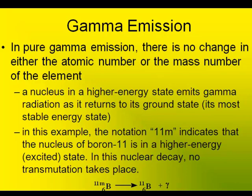Unlike the other two forms of natural radiation, gamma radiation is a wave — it's not a particle. So it has no mass. It's neither an electron, a neutron, a proton — none of those particles. It's just a wave of energy, and it's denoted by this symbol down here, which is actually the Greek letter gamma.